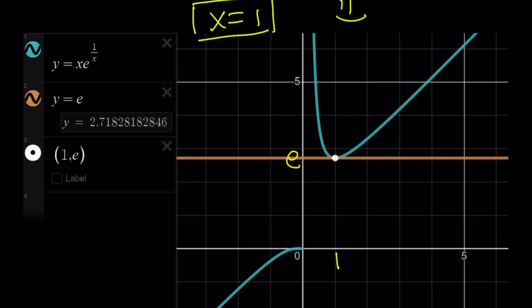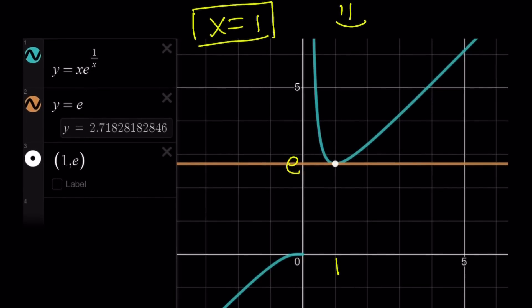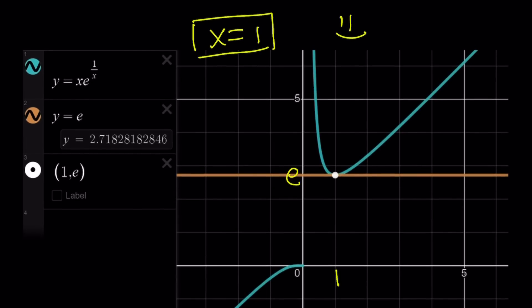Now, what would happen if this function equals another y value like one over e or anything less than e and greater than zero? Then you would have no solution because the horizontal line would not be intersected. And this brings us to the end of this video. Thank you for watching. I hope you enjoyed it. Please let me know. Don't forget to comment, like, and subscribe. I'll see you tomorrow with another video. Until then, be safe, take care, and bye-bye.